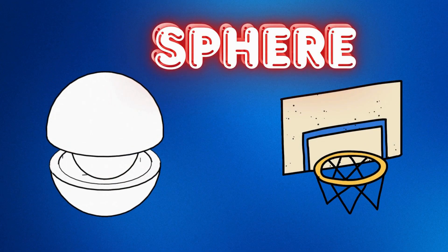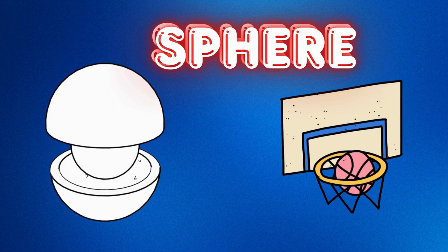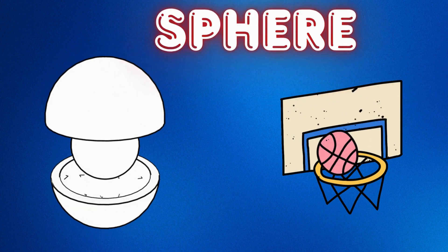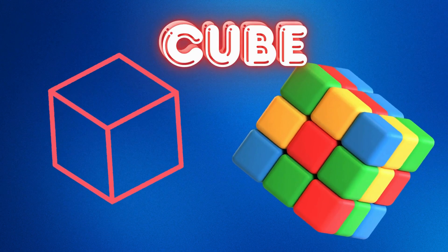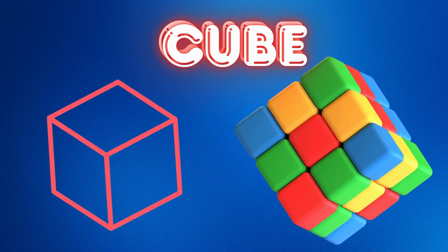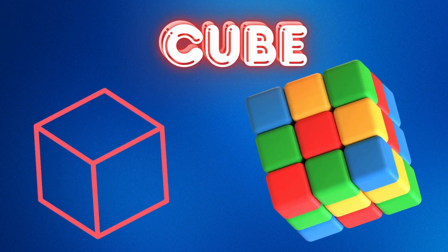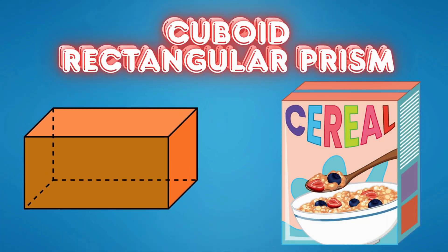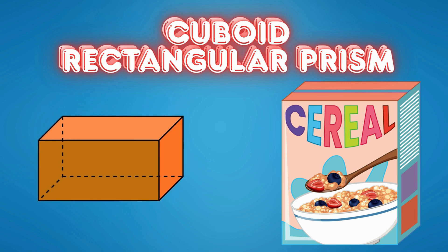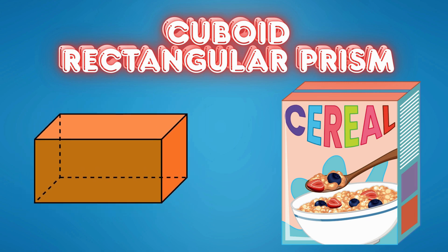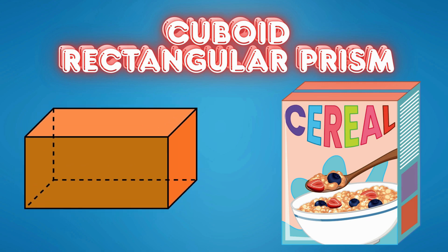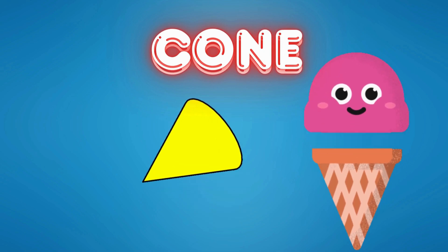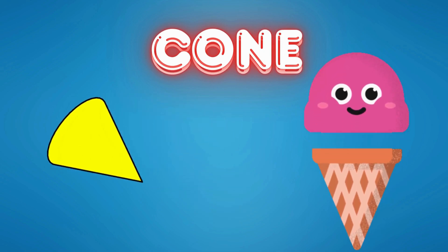A sphere, like a basketball. A cube, like a Rubik's cube. A cuboid, or rectangular prism, like a cereal box. A cone, like an ice cream cone.